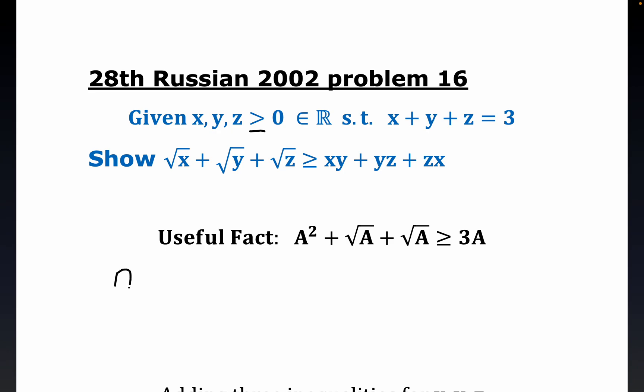The proof of this using the AM-GM would go something like this: A squared plus the square root of A plus the square root of A over 3.